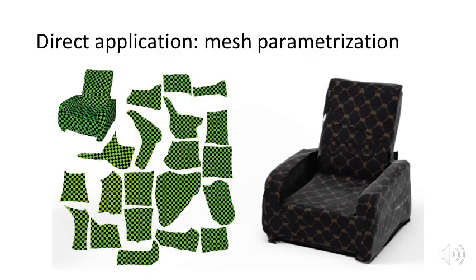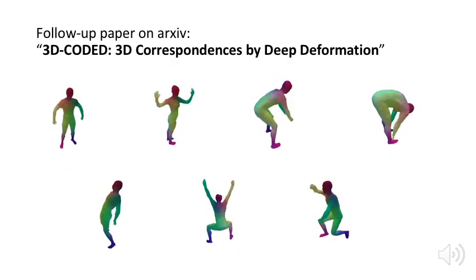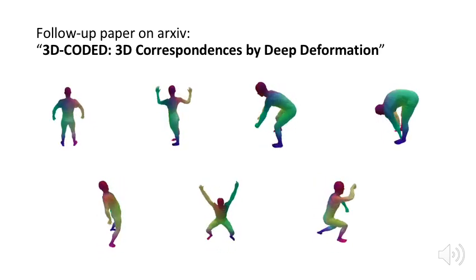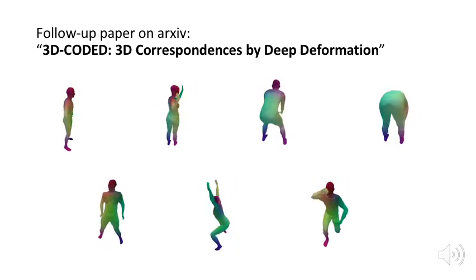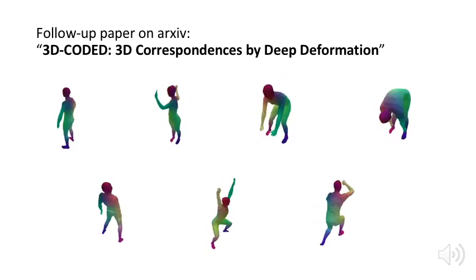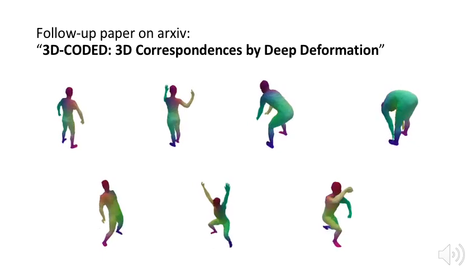Obtaining an Atlas is also useful for many applications. For example, atlases are natural texture coordinates, and can be optimized by existing methods to apply new textures on 3D objects. We observed that each patch naturally specializes in a part of the object. We explored this idea further in a follow-up paper, and obtained state-of-the-art results on human correspondences.